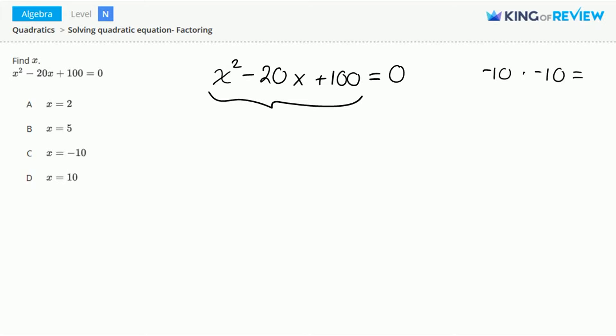Negative 10 times negative 10 is 100, and negative 10 plus negative 10 equals negative 20.